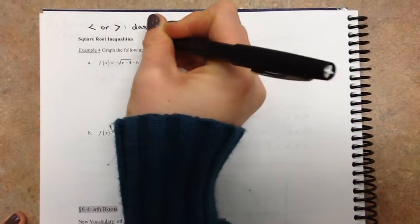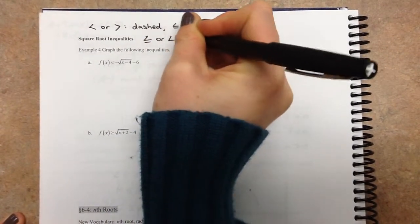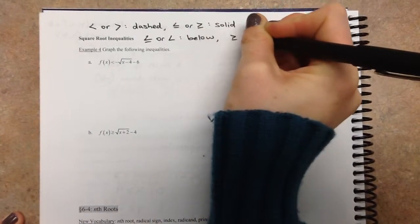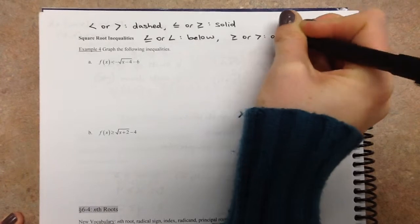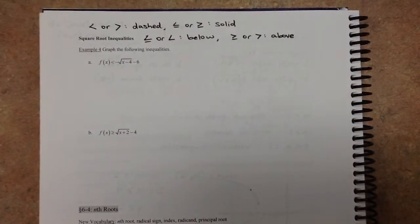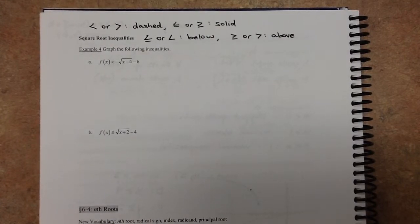So if you have a less than or equal to or just a less than, you're shading below the graph. And if you have a greater than or equal to or just a greater than, you are shading above the graph. So we need to figure out what kind of line it's going to be and how we're going to shade it. That's really the only thing new, the graphing part is identical to what we did in the previous video.